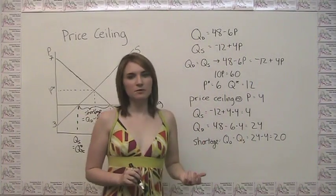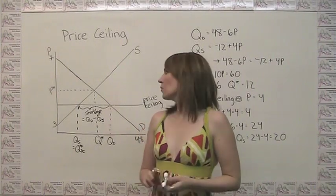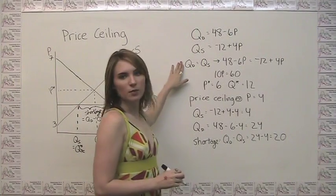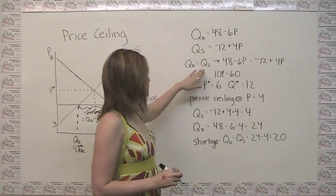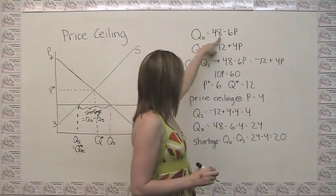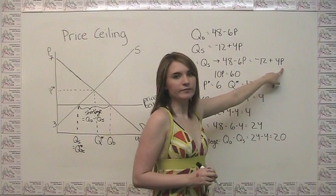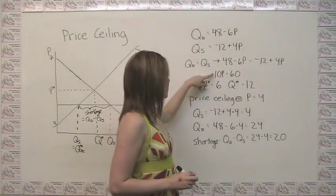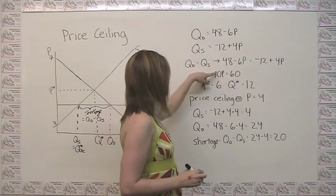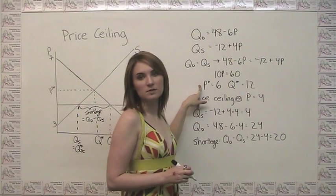Now the first question we can ask ourselves is, before we put this price ceiling in place, what is the equilibrium price and quantity? To do that, we find the point where quantity demanded and quantity supplied are the same. Which means that 48 minus 6p equals negative 12 plus 4p. Doing a little algebra, if we put all the p's on one side and all the constants on the other, 10p equals 60, or our equilibrium price equals 6.